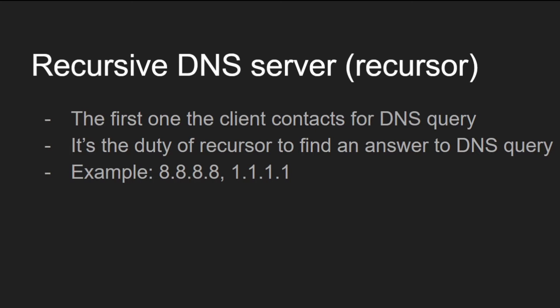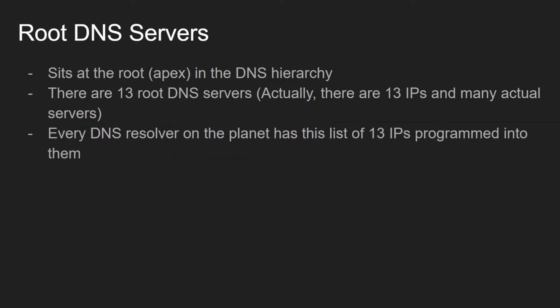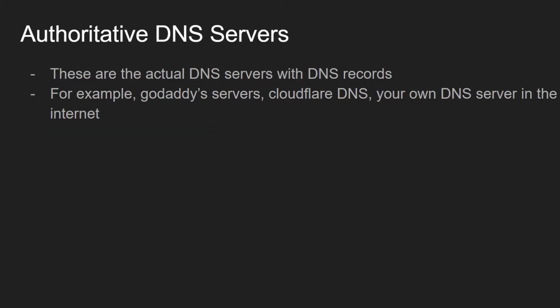Another important thing is the root DNS servers, which sit at the root of the domain name system hierarchy. There are 13 root DNS servers — when I say 13, it does not mean there are only 13 physical servers. It means there are 13 different IP addresses, and there may be hundreds or even thousands of DNS servers behind them. Every single DNS recursive resolver software on this planet will have the list of these 13 IP addresses programmed into them.